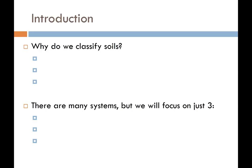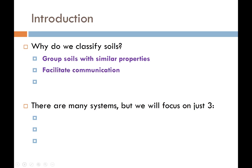So why do civil engineers, and specifically geotechnical engineers, classify soils? There are a couple of reasons. First, we like to group soils that have similar properties — certain types of soils tend to behave in the same manner. Grouping them and assigning a name facilitates communication and provides a convenient shorthand notation. When writing technical reports, a little symbol or name for the soil can pack a whole lot of information.